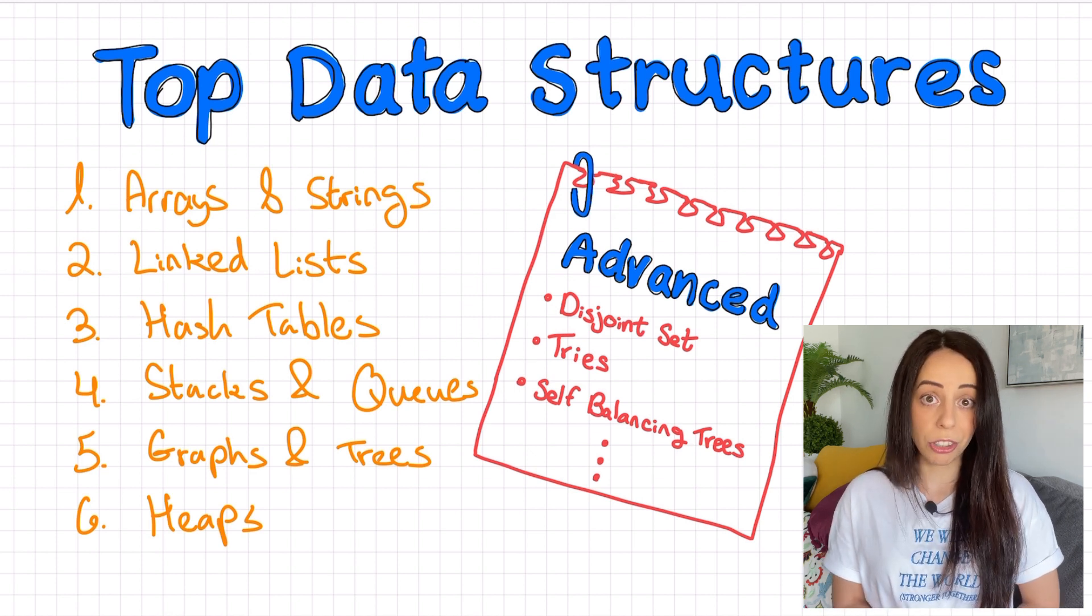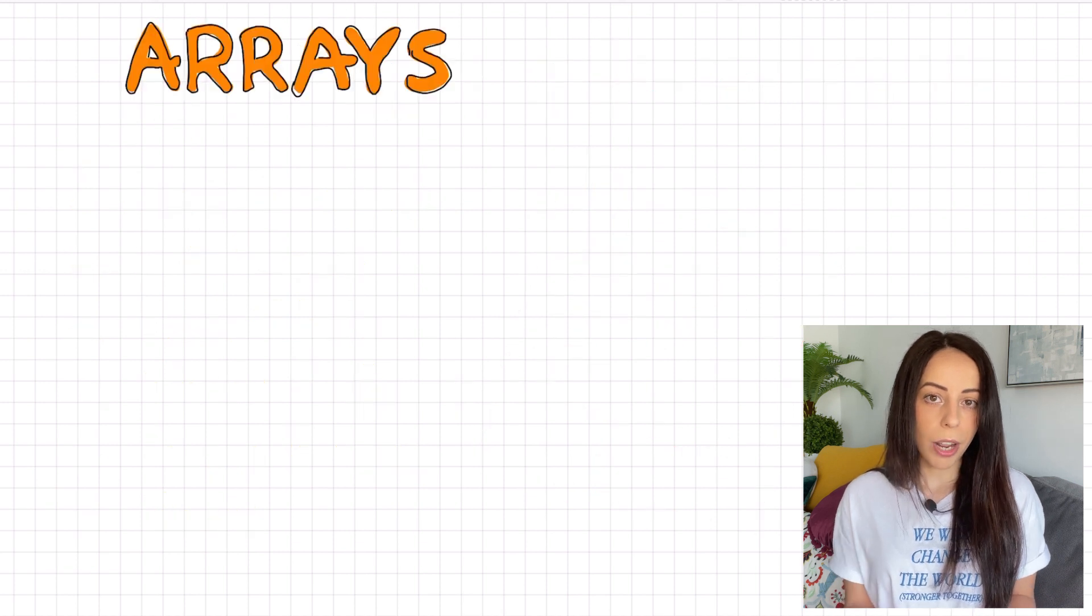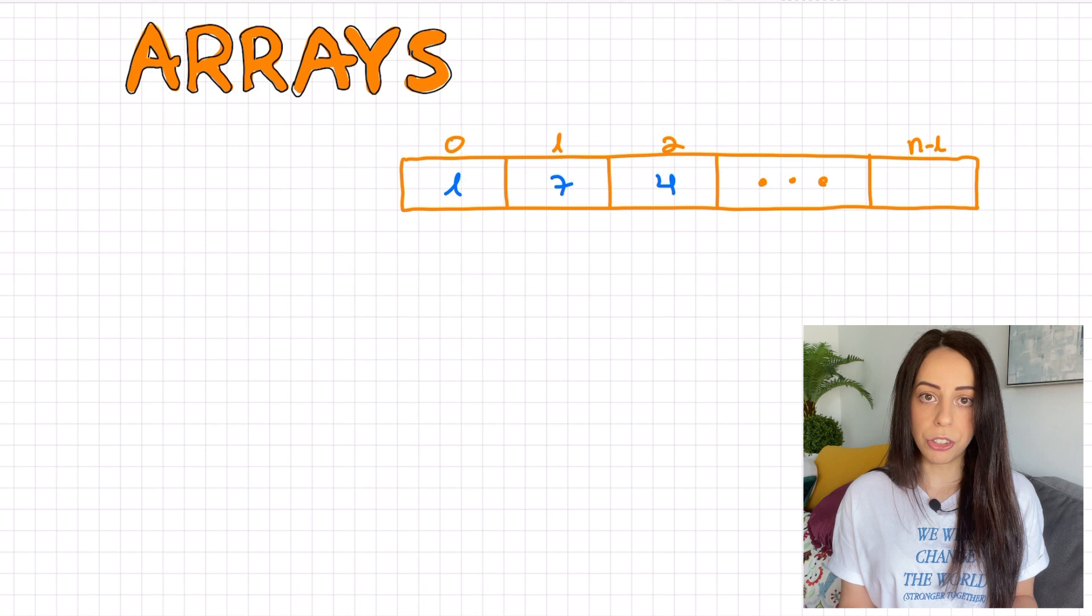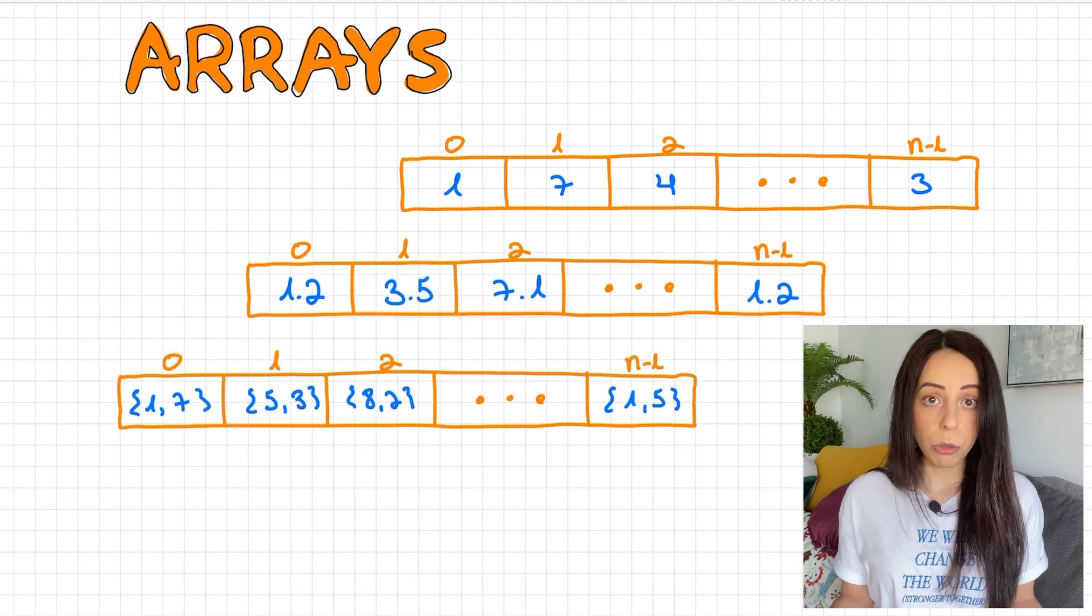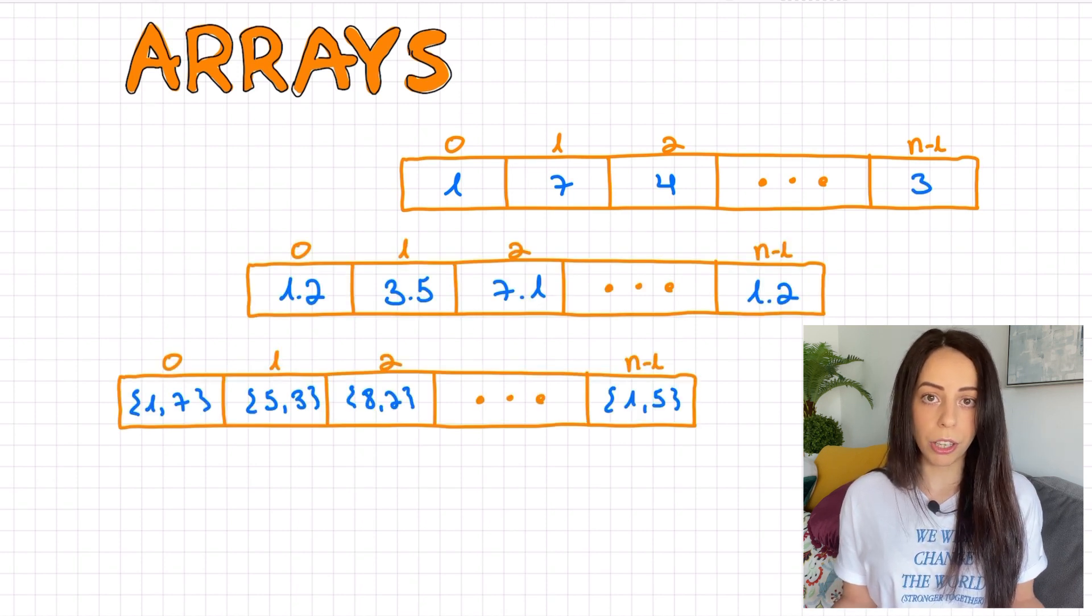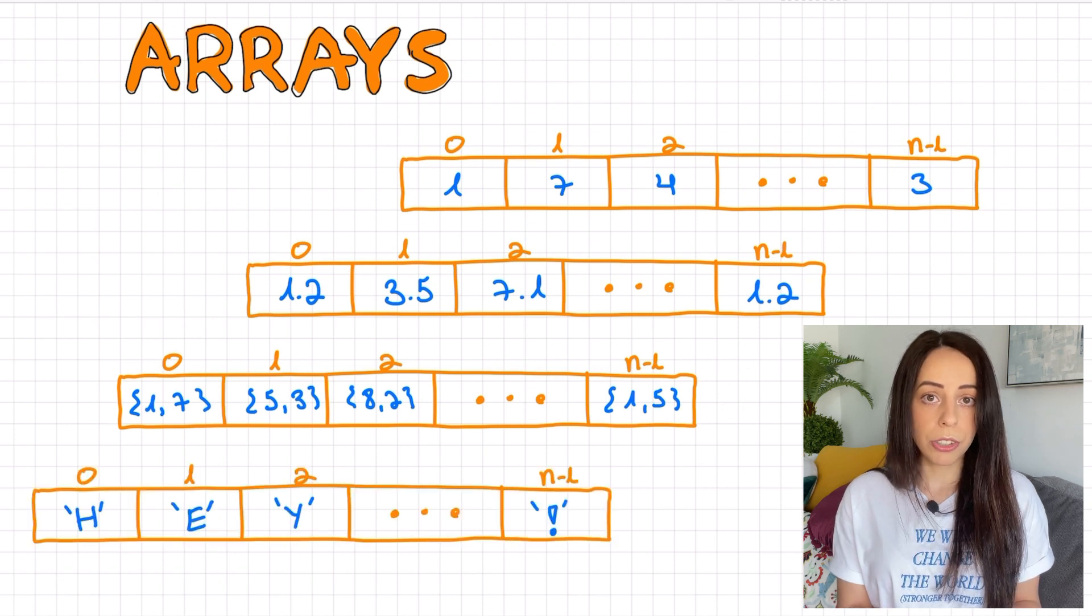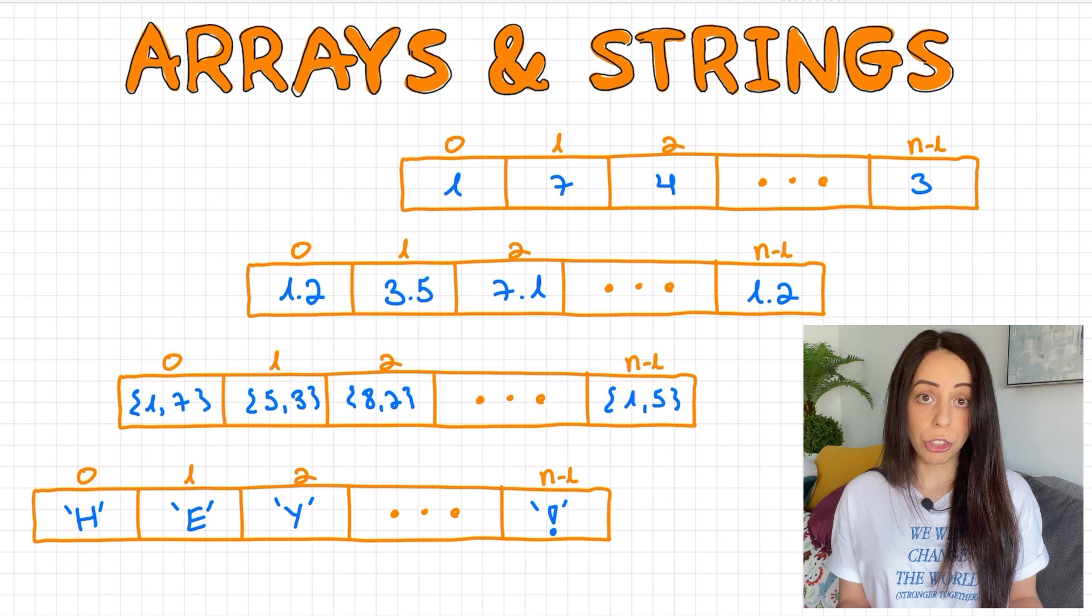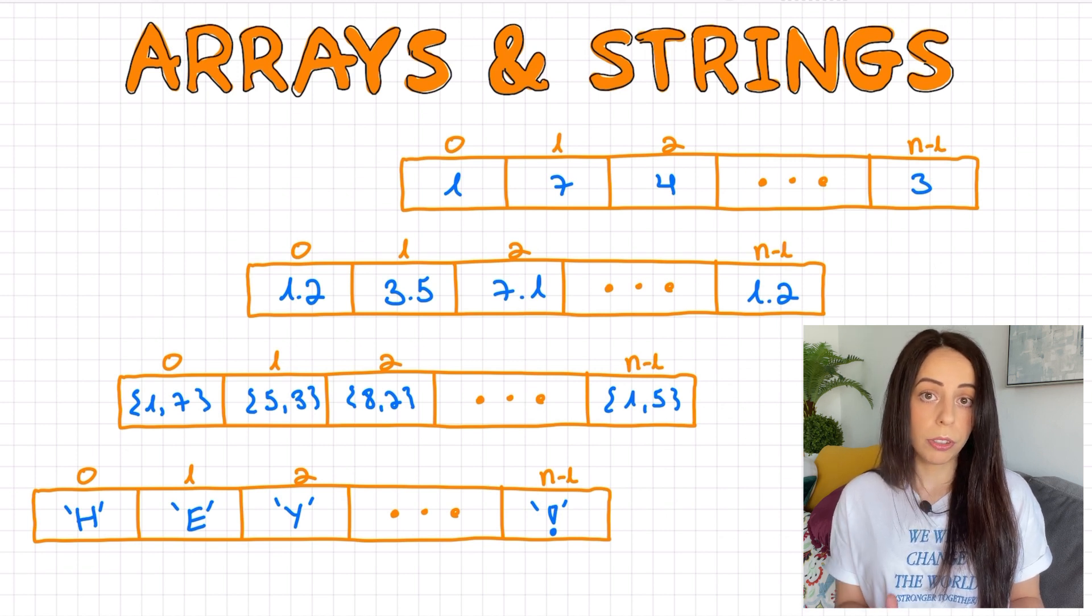Okay, so we start with the most basic data structure there is, the array. An array is a set of elements stored continuously in memory. You can have an array of integers, an array of floats, an array of custom structures or any other type you can think of. Arrays of characters are so useful that they have their own name. They're called strings. So strings are just a special, very useful type of arrays.